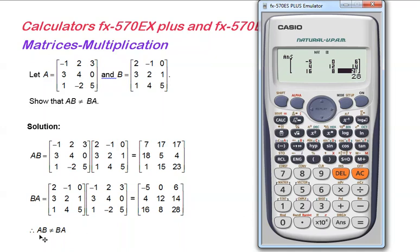The result is negative 5, 0, 6, 4, 12, 14, 16, 8, 28. From this activity, we can show that the matrix AB is not equal to matrix BA. In matrices, for multiplications, matrix AB is not commutative with matrix BA.